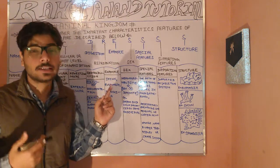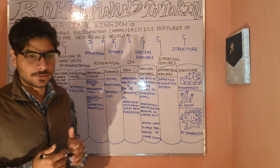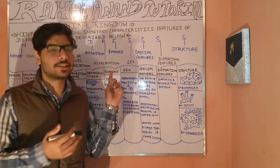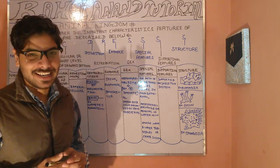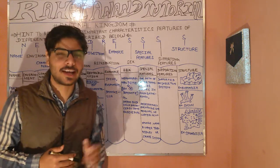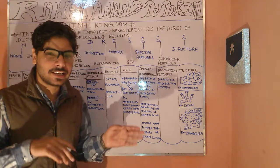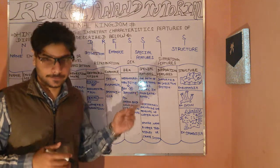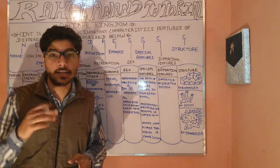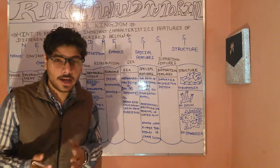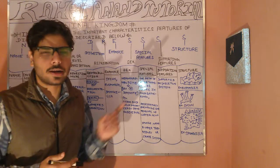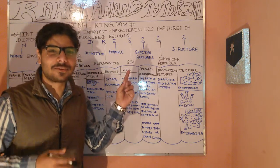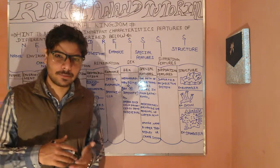Porifera belongs to one of the chapters of your books — the Animal Kingdom. When we talk about Animal Kingdom, let's distinguish the words. 'Animal' comes from 'any' meaning air to breathe, and 'mulk' meaning soil. 'Kingdom' is the largest category in biological classification. We have two major kingdoms: fauna, standing for the animal kingdom, and flora, standing for the plant kingdom.